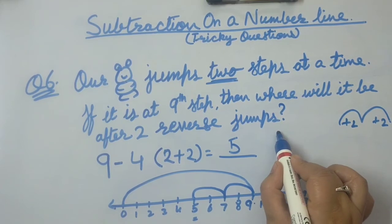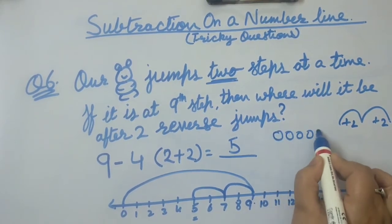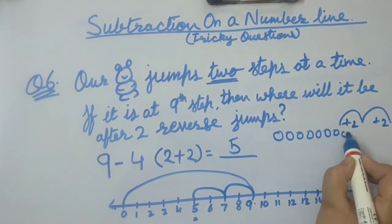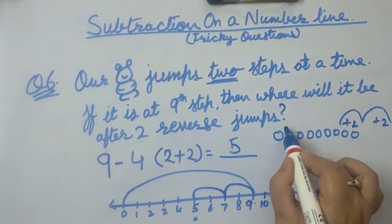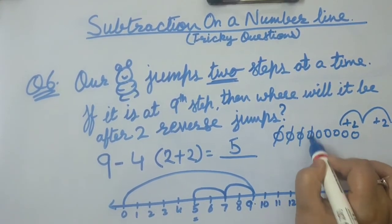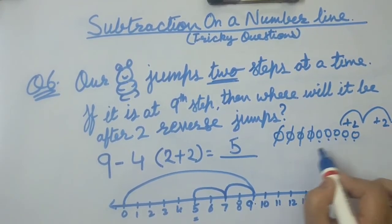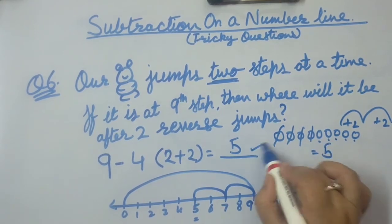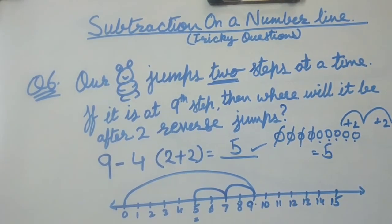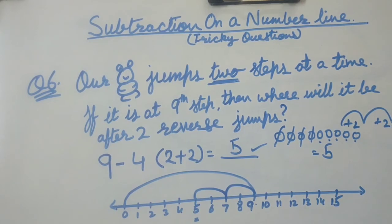Checking on circle method. Drawing circles 1 through 9. Cutting 4 circles: 1, 2, 3, 4. Counting remaining: 1, 2, 3, 4, 5. Yes, our answer is correct. Hope you understood the concept of subtraction on the number line.